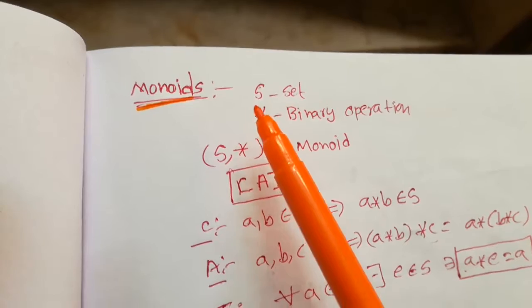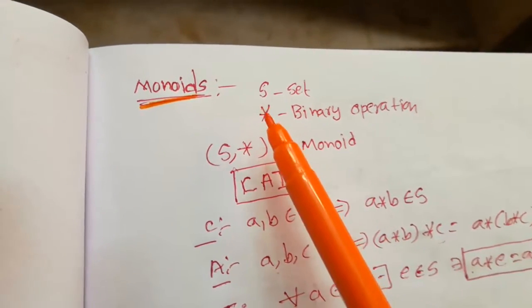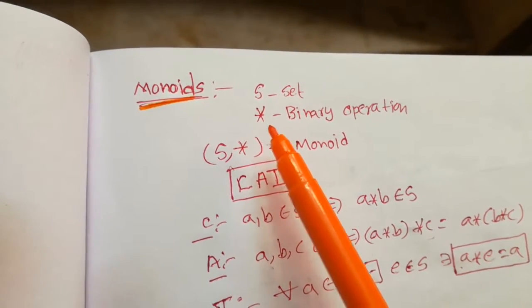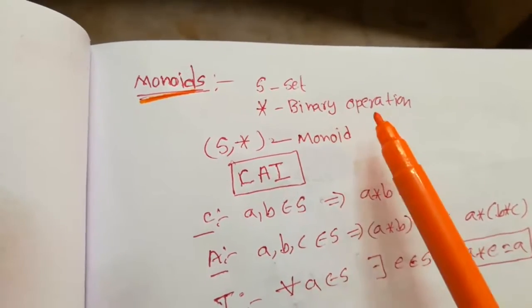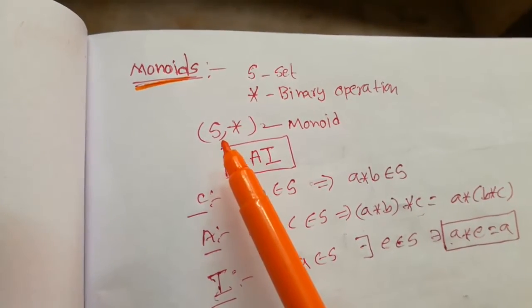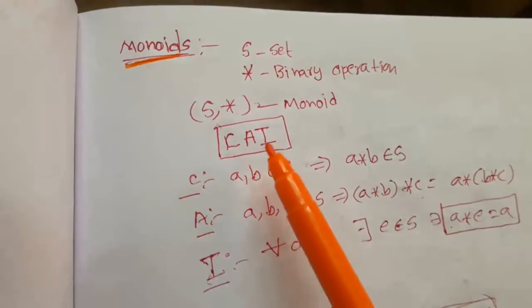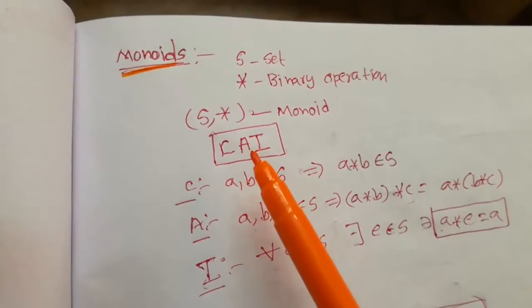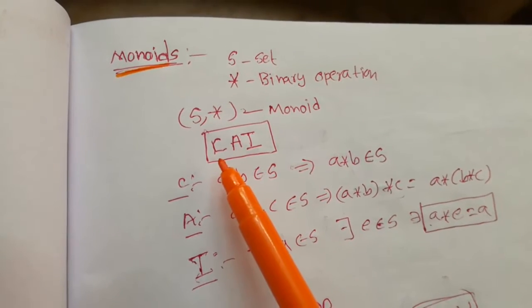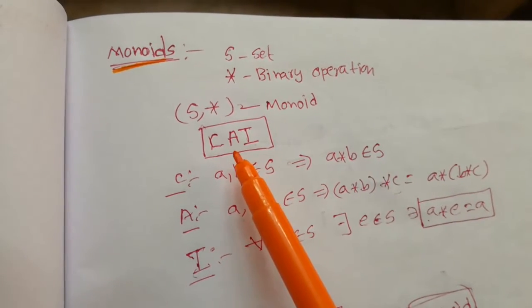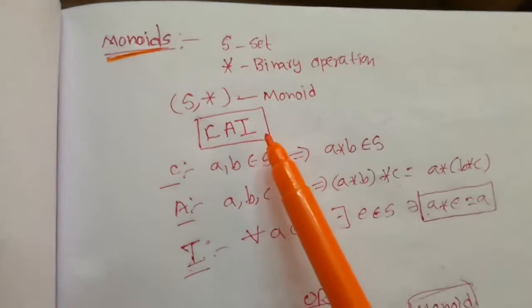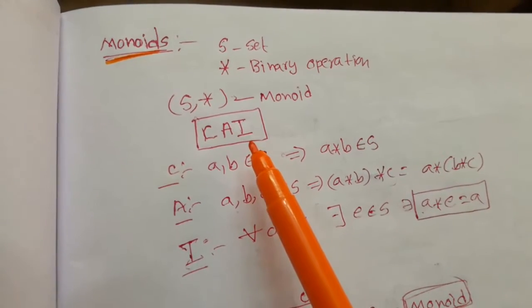Let S be a non-empty set and star be a binary operation. Then S star is said to be a Monoid if it satisfies closer property, associative property, and identity property.